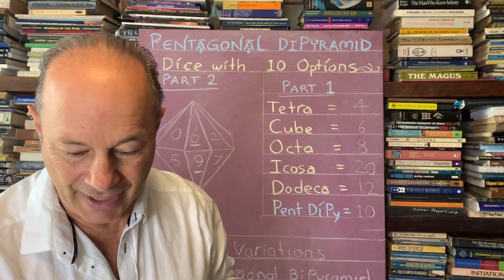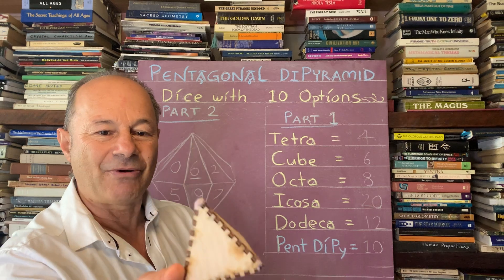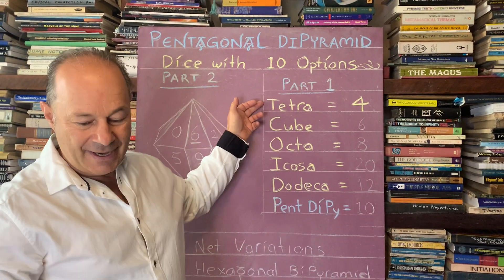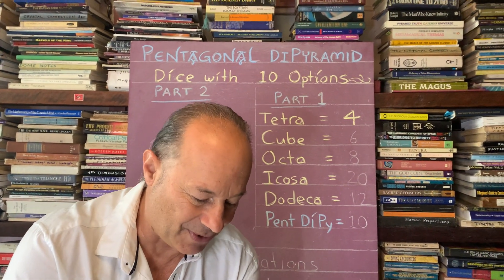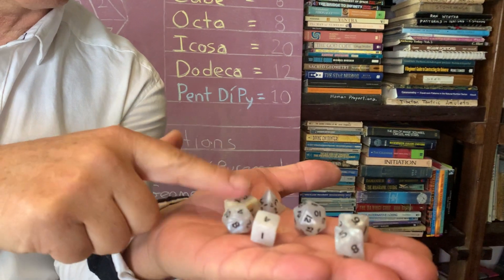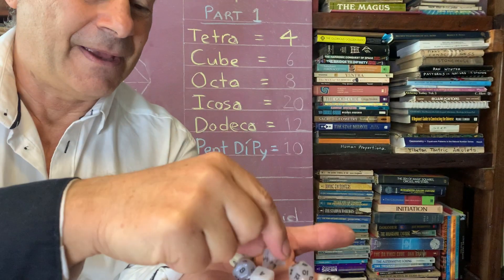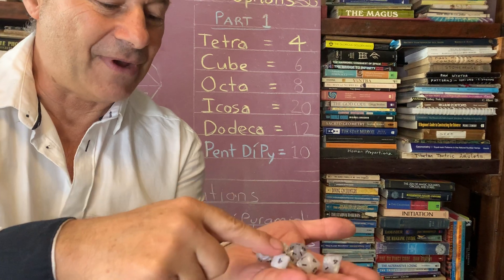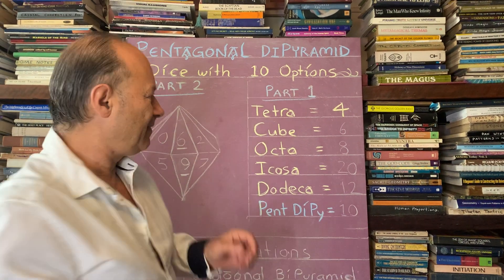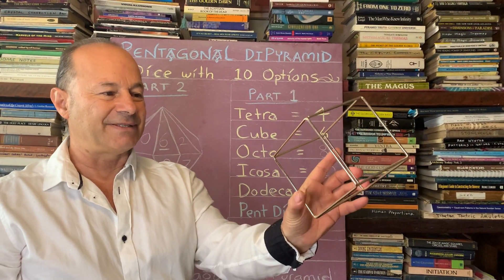Most people know the tetrahedron — it has four faces, giving four options when rolled. The word 'hedron' means face. Here we have the five platonic solids, each giving different numbers of options. The tetrahedron gives four, and the cube gives six — the basic cube with six faces.